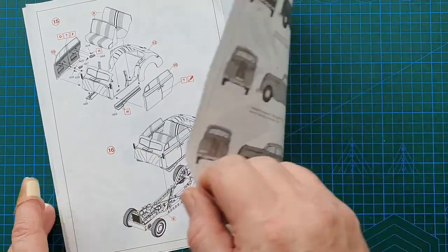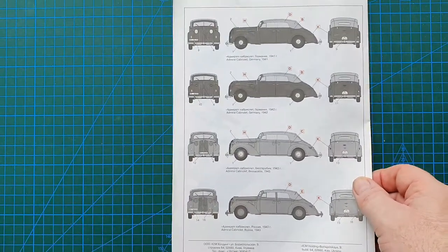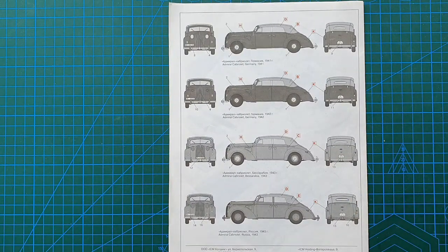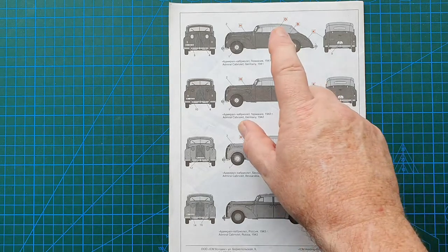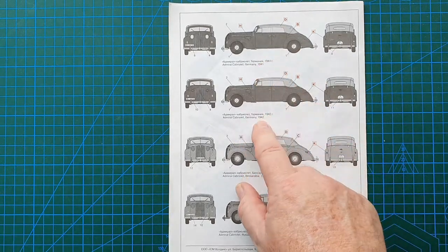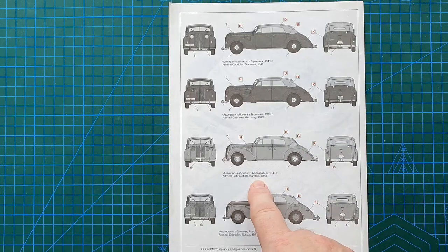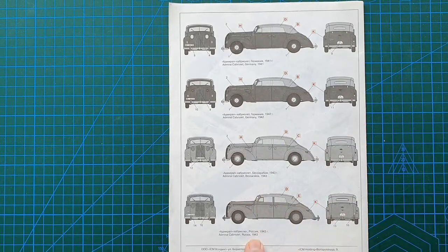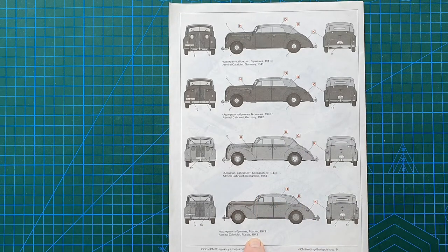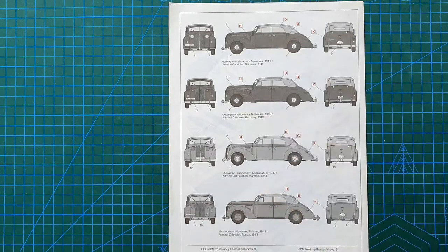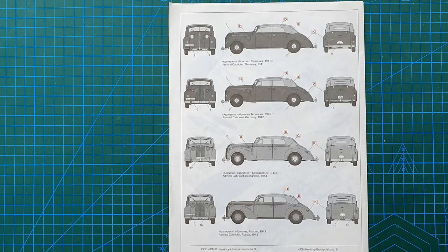So that's basic construction, and then you just get to the painting guide. So what you've got here is Germany 41, Germany 42, Bessarabia 43, and Russia 43. So four different colour call outs.